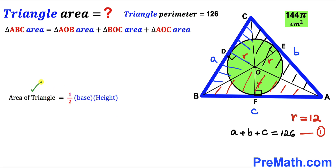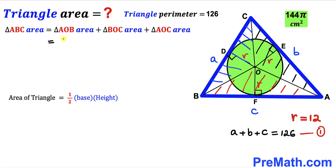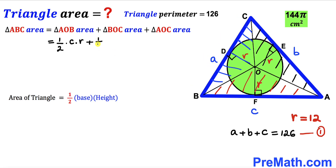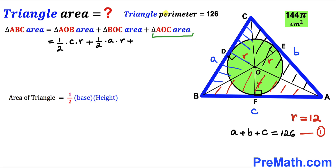The area of blue triangle ABC equals the sum of these three individual triangle areas: area of AOB + area of BOC + area of AOC. Recalling the triangle area formula — area = ½ × base × height — for triangle AOB the base is c and the height is radius r; for triangle BOC the base is a and the height is r; and for triangle AOC the base is b and the height is r. So the total area = ½cr + ½ar + ½br.